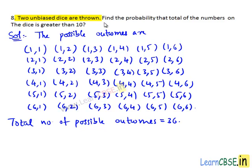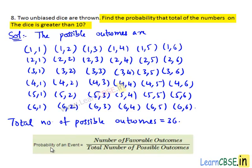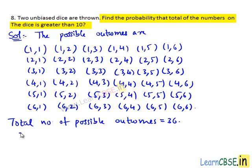Now, we need to find the probability that total of the numbers on the dice is greater than 10. We know that probability of an event is the ratio of number of favorable outcomes of the event to the total number of possible outcomes. Let E be the event of getting sum of numbers on the dice greater than 10.